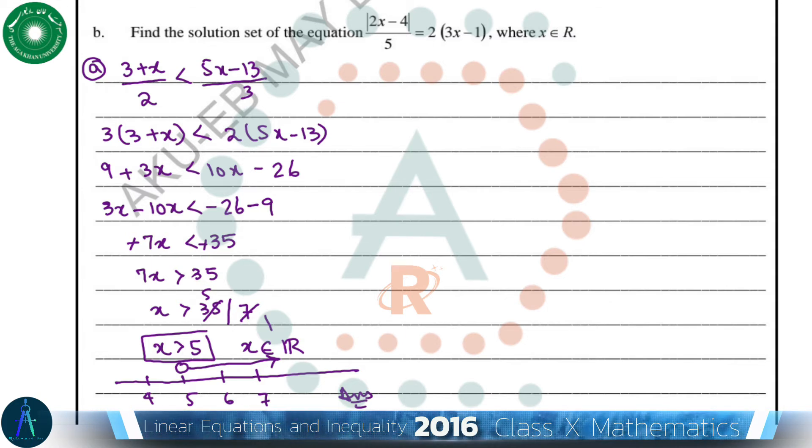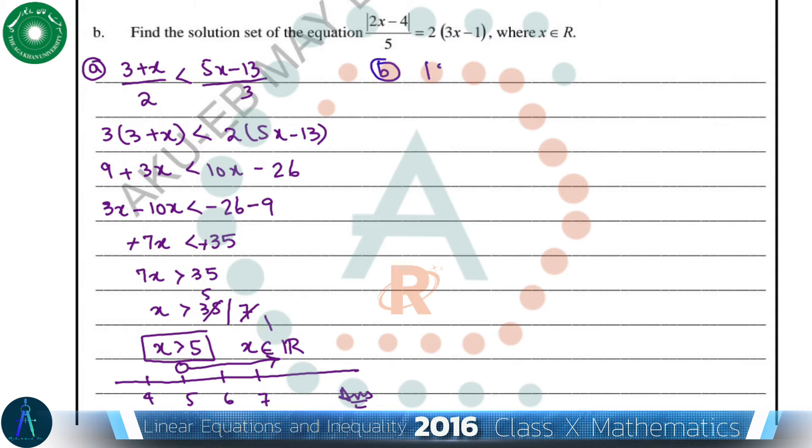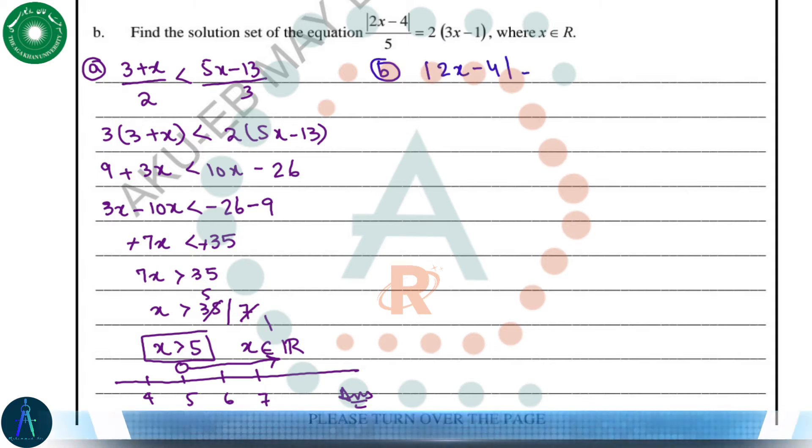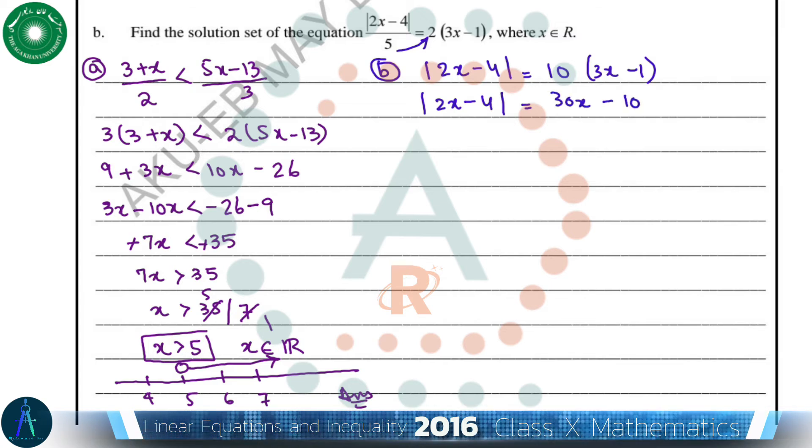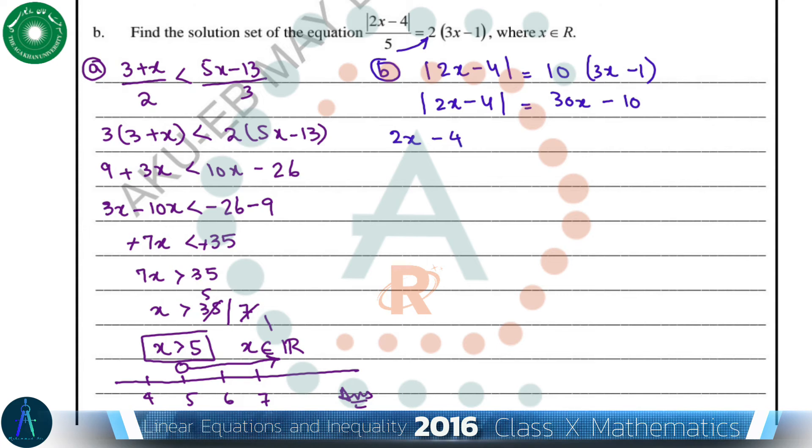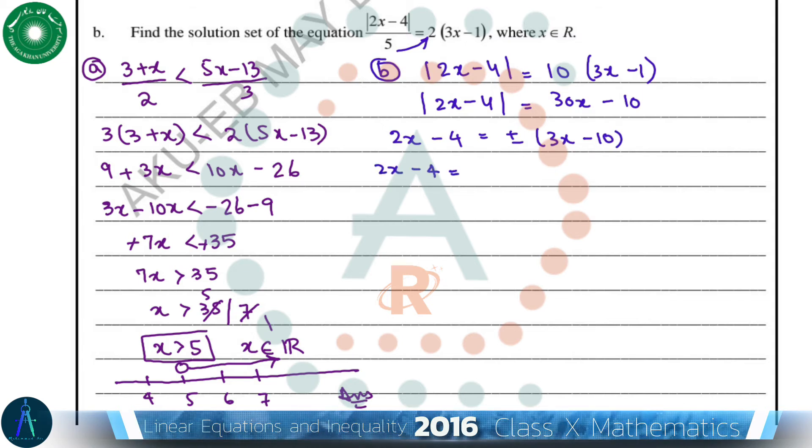In part b we have a modulus equation, so let's solve this modulus equation. |2x - 4| = |3x - 10|. This becomes 2x - 4 = ±(3x - 10). So plus case: 2x - 4 = 3x - 10.